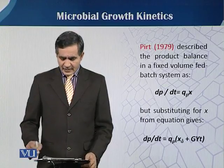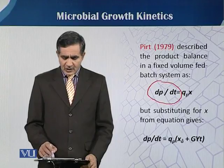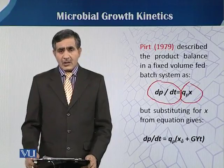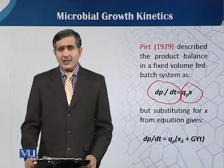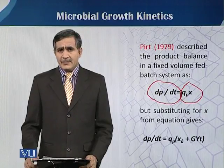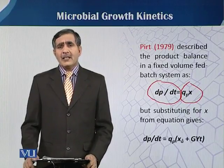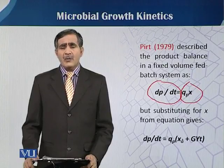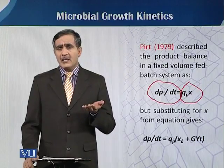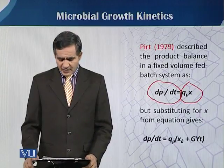We can say that dp/dt is equal to qp·x. The change in product concentration with respect to change in time is qp multiplied by x. This equation basically states that product formation is directly associated with the biomass — as the biomass increases, it has an effect on the change in product concentration.